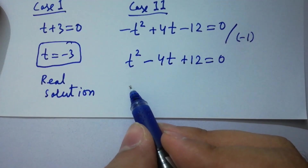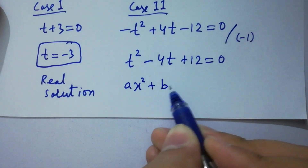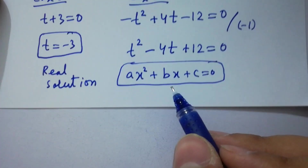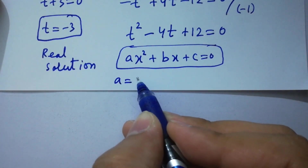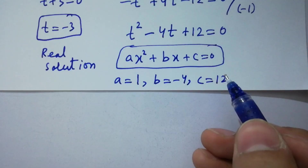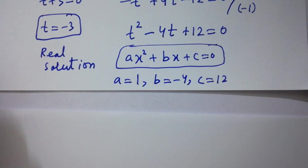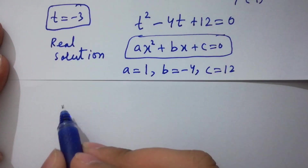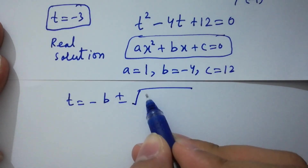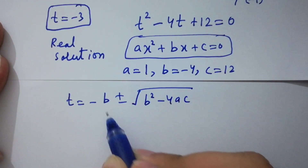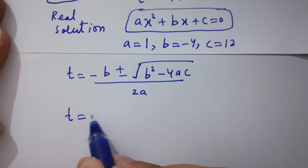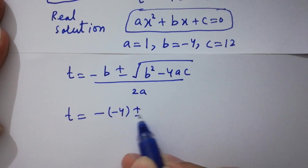This is a quadratic equation of the form ax-squared plus bx plus c equal to 0. By corresponding, we have a equal to 1, b equal to minus 4, and c equal to 12. Now apply the quadratic formula: t equals minus b plus or minus square root of b-squared minus 4ac, over 2a.